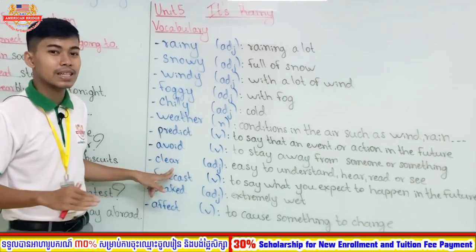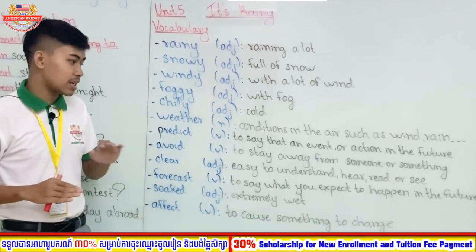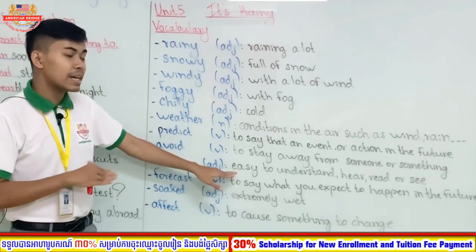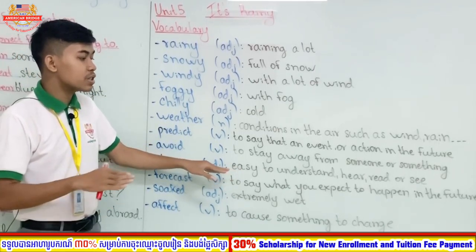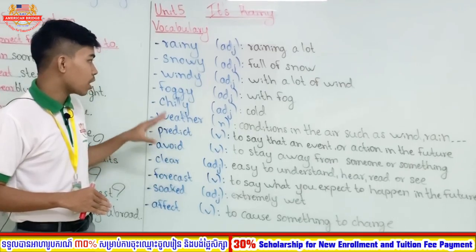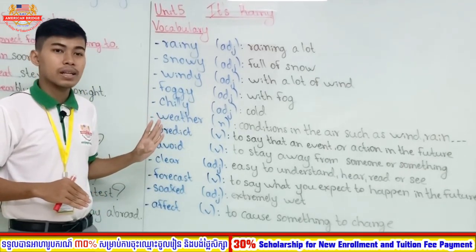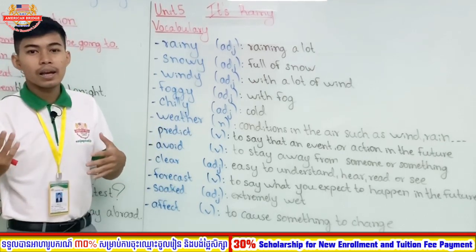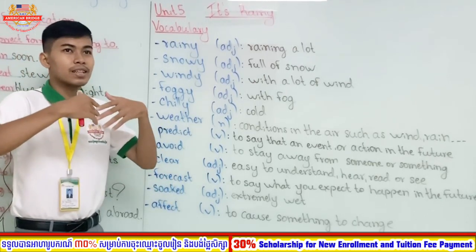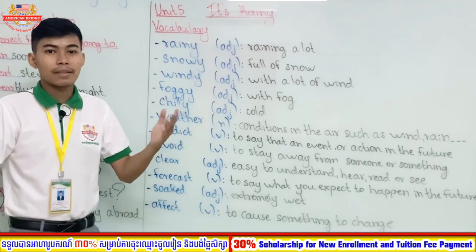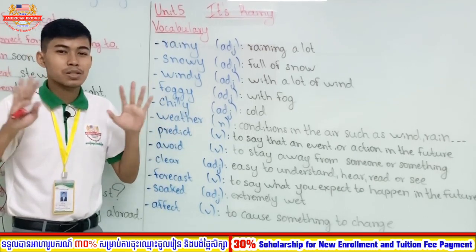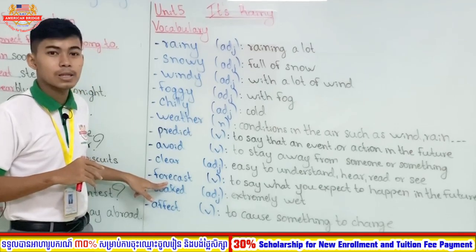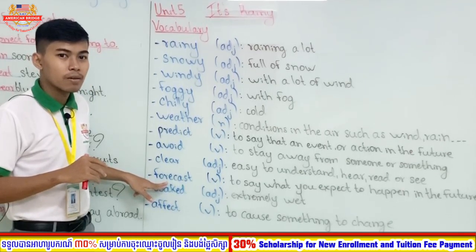The next word is 'clear.' Clear is an adjective referring to something that is easy to understand, easy to hear, easy to read, or easy to see. When we talk about weather, if the weather today is clear, it means it is not rainy, it is not foggy — you can see the sky very beautifully. That is called clear.